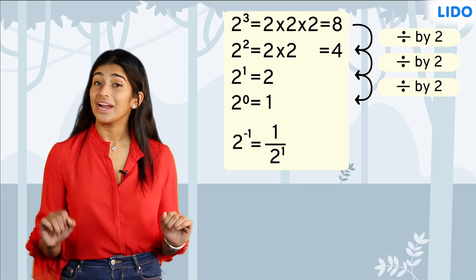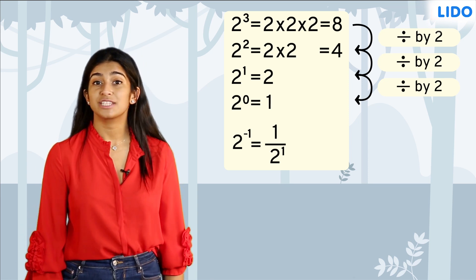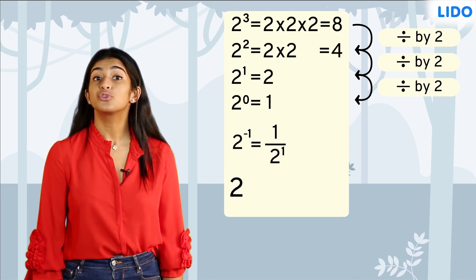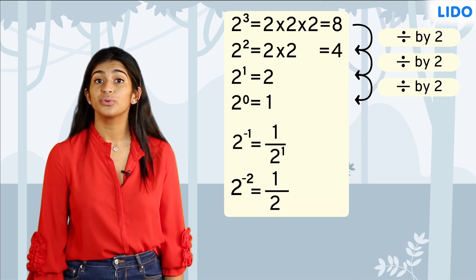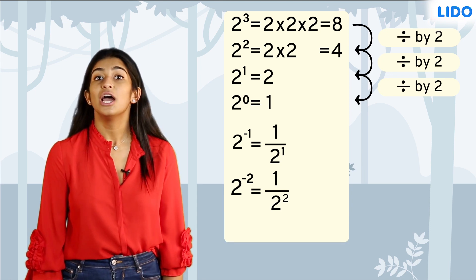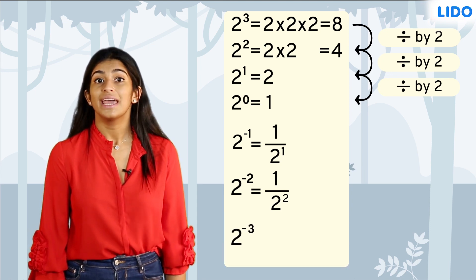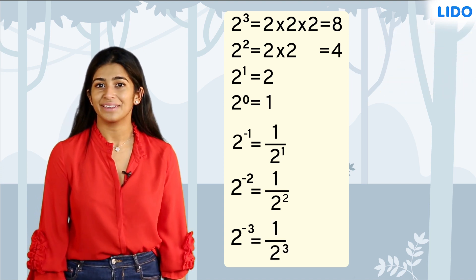I think you already got the pattern, but let's do this one more time. Let's reduce the exponent by 1 again to have 2 raised to negative 2, which should equal 1 over 2 divided by 2, or 1 over 2 raised to 2. Similarly, 2 raised to negative 3 gives us 1 over 2 raised to 3. Do you see a pattern forming?